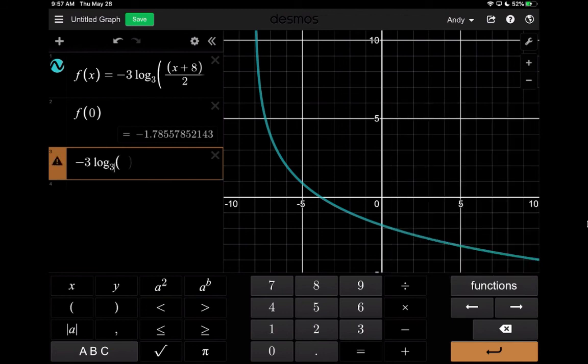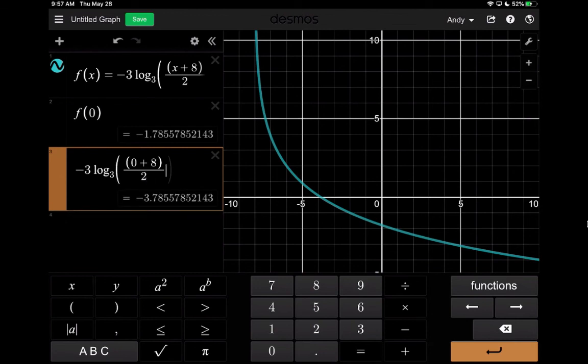So you can also just go negative 3 times log base a, and using a is 3. And inside the brackets, we've got an x. So I can plug in the 0 here. 0 plus 8, close the brackets, divided by 2, and then close the brackets on the whole thing, the argument of the logarithm, and then add 2 to that, and you see we get the same value.